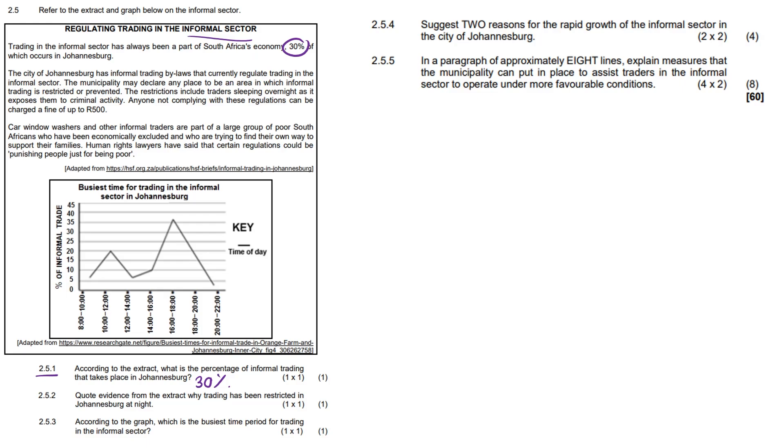Look, this is a self-explanatory answer. It's definitely going to be crime, but we have to get it from the source. So exposes them to criminal activity. It's right there. 2.5.3.